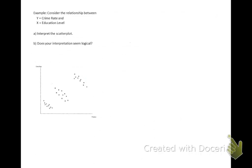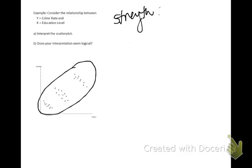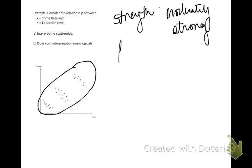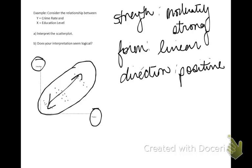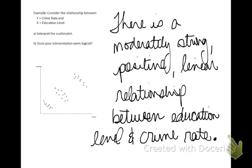Here's another example: consider the relationship between crime rate and education level. Banding the points, the strength looks moderately strong. The form appears to be linear — you can fit a straight line through these values. The direction would be positive: as education level increases, crime rate increases. Context: x stands for education level and y stands for crime rate. Putting this together: there is a moderately strong, positive, linear relationship between education level and crime rate.